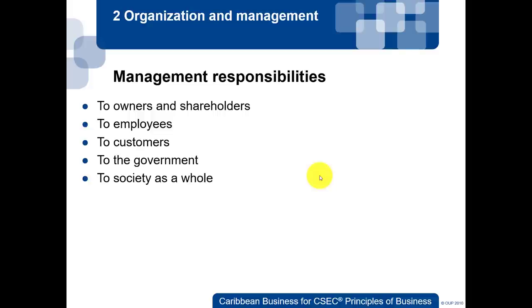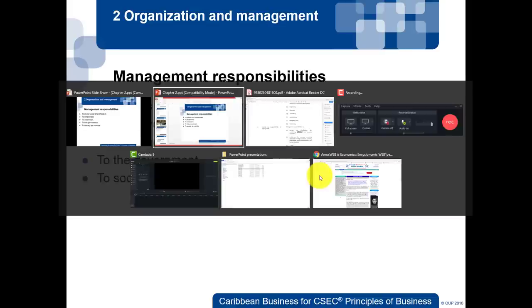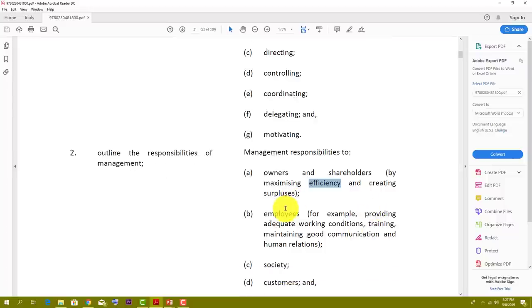Another obvious responsibility to employees is pay — giving people what they're worth. Management must give employees a fair salary and a fair wage. You do not cheat or undercut anybody. Responsibilities to employees also include providing adequate working conditions, good working relationships, and both the mental and physical aspects of the work environment.